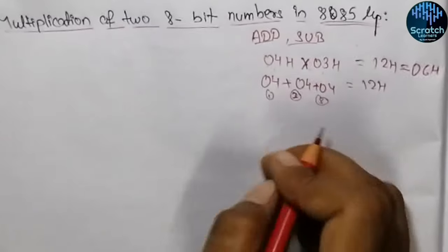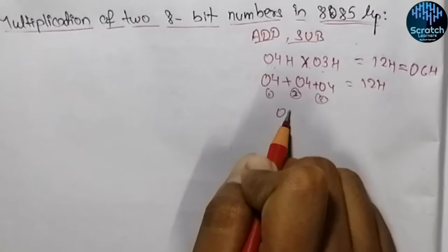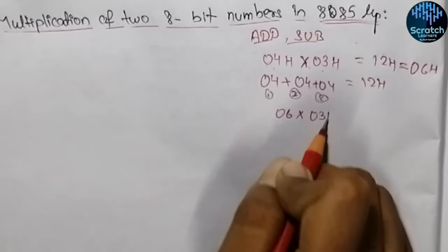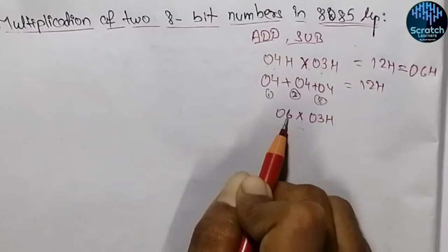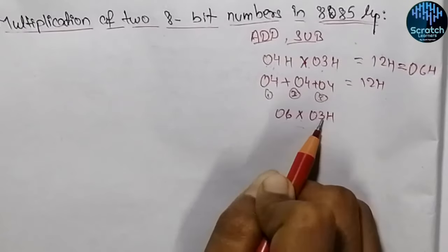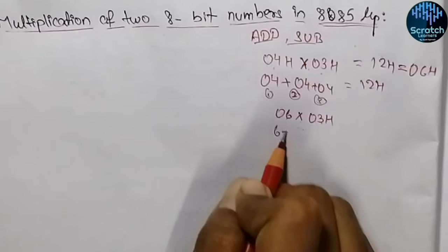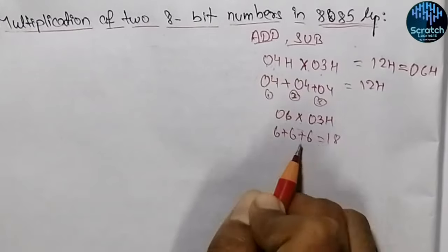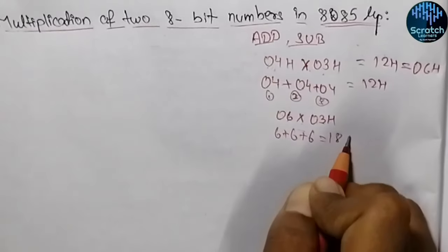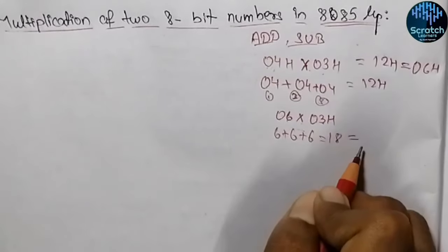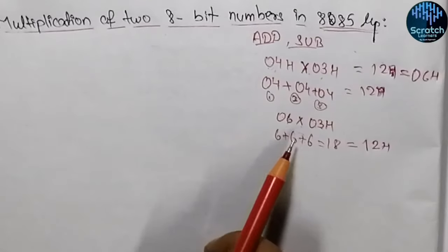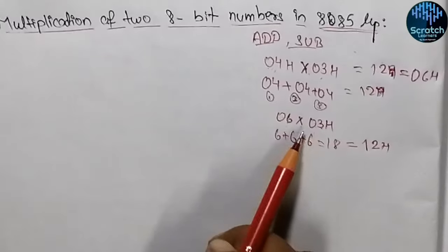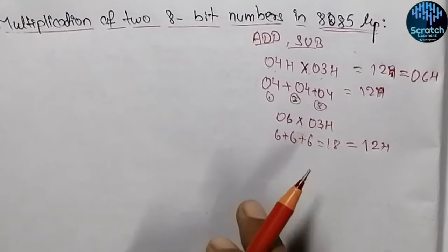Just take another example: 06 into 03 hex. So if we add 6 three times, what we will get? 6 plus 6 plus 6 is equal to 18. But in hexadecimal, this will be equal to 12 hex. So I hope this is clear — by repetitive addition, we can get the result of multiplication.